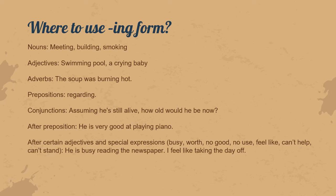The ing-form can also be used for adjectives — for example, 'swimming pool' or 'a crying baby'. You can change that to a verb by saying 'the baby is crying' or 'the baby was crying'. The ing-form can also be used for adverbs — for example, 'the soup was burning hot', where 'burning' is the adverb in the sentence.